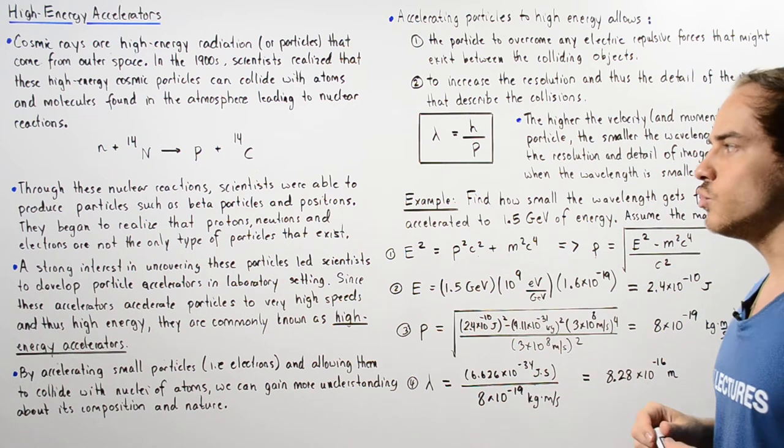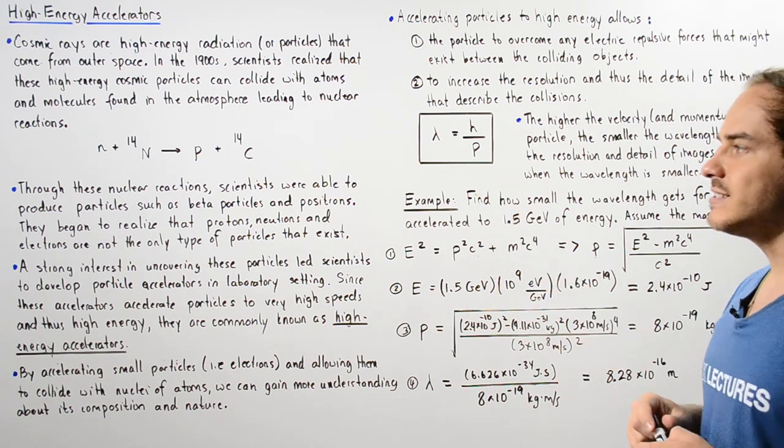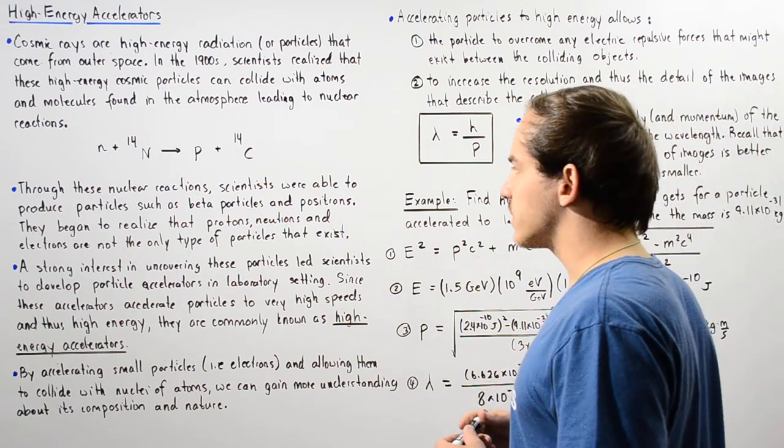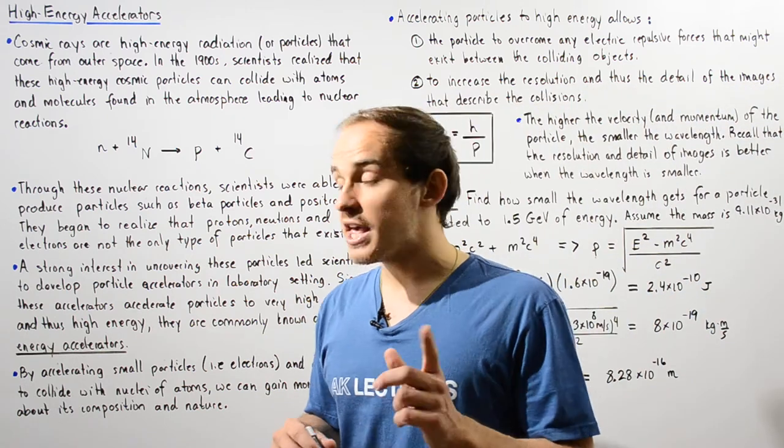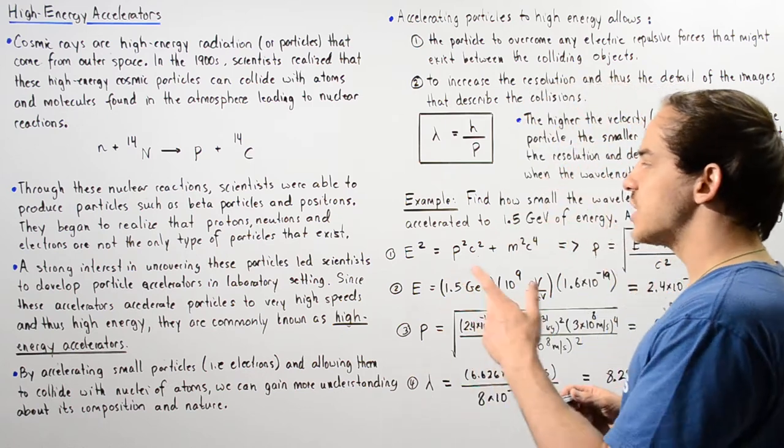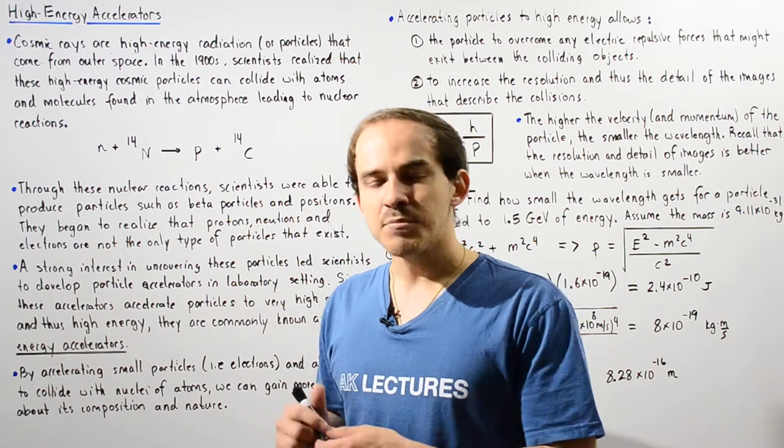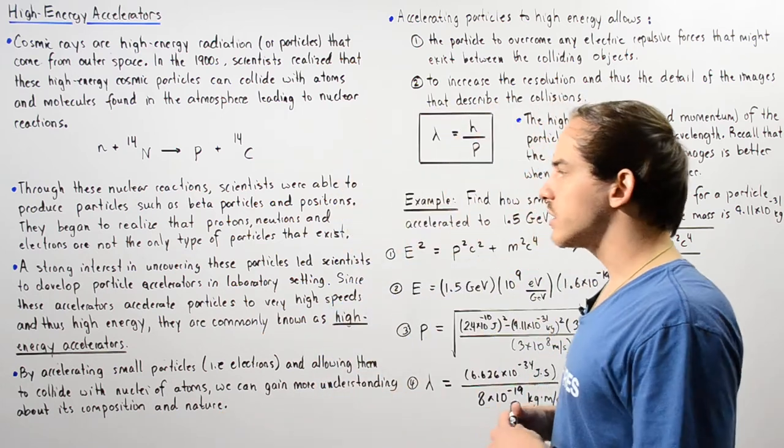Through these nuclear reactions, scientists were able to produce particles such as beta particles and positrons, and they began to realize that protons, neutrons, and electrons are not the only type of subatomic particle.